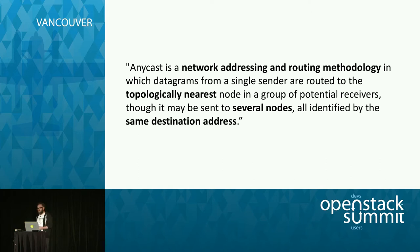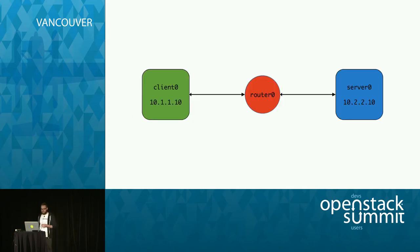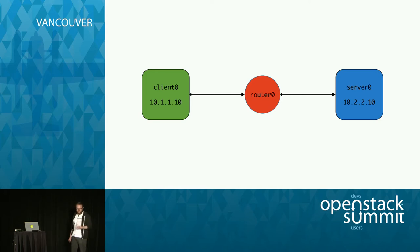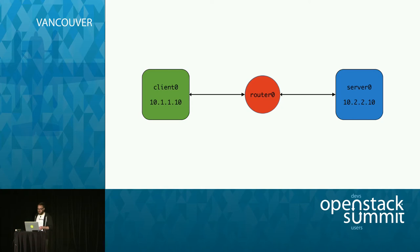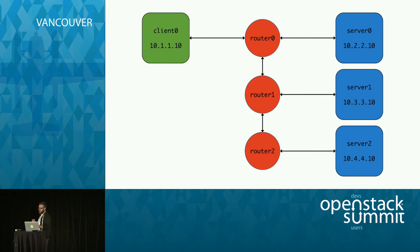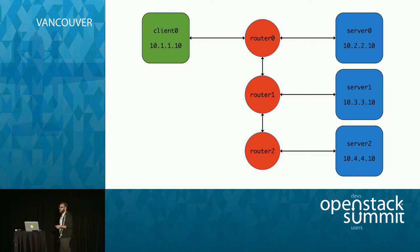To understand what that means in practice, let's first look at something much more basic. This is a typical Unicast traffic pattern in a routed IP network. When client zero wants to send traffic to server zero, it has essentially one path it can possibly take — two hops: from client zero to router zero, then from router zero to server zero. Adding additional routers and servers to the mix, client zero can still reach any of these servers in a straightforward way with Unicast traffic.